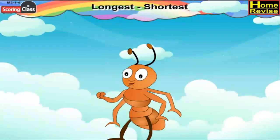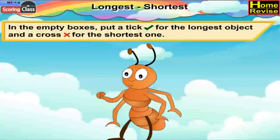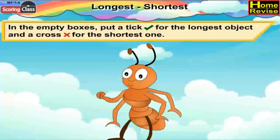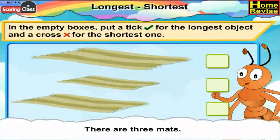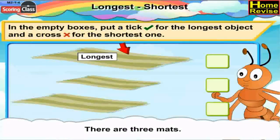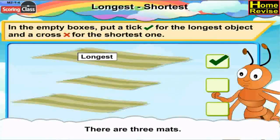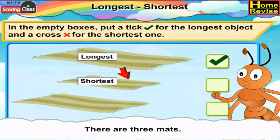Here is a question for you. In the empty boxes, put a tick for the longest object and a cross for the shortest one. In the first picture, there are three mats. Which one is the longest? You are right, my genius — the first one is the longest, so put a tick in the box in front of the first mat. Now we'll find the shortest mat — the second mat is the shortest, so put a cross in the box in front of the second mat.